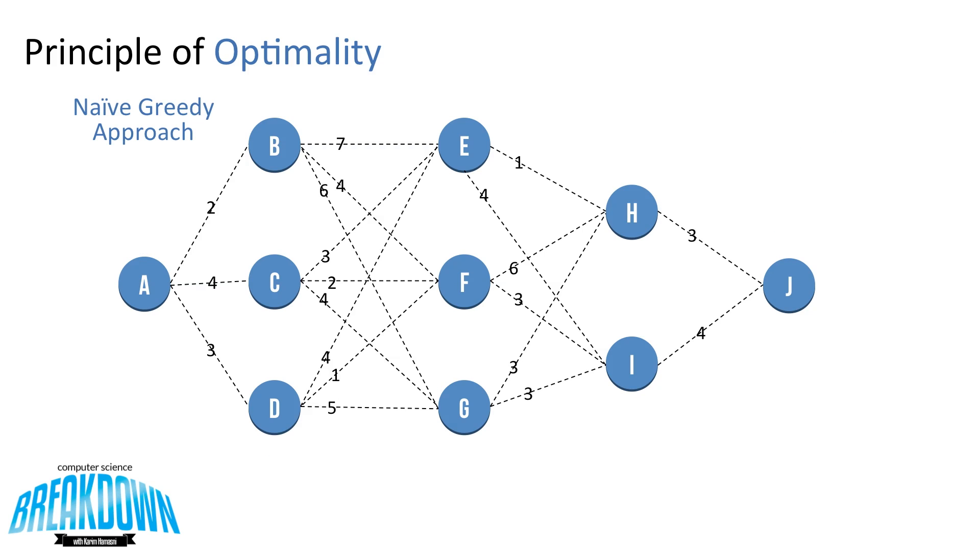So let's try a naive, greedy approach to this problem. So starting at node A, we're going to go the shortest path, and in this case it's from A to B with a cost of 2. In the top right corner, we'll keep track of our running sum.